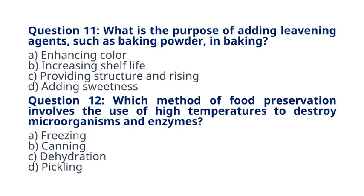Question 12. Which method of food preservation involves the use of high temperatures to destroy microorganisms and enzymes? A. Freezing B. Canning C. Dehydration D. Pickling. The correct answer to question 12 is option B. Canning. Explanation: canning involves heating food to high temperatures to kill microorganisms and enzymes, preventing spoilage.